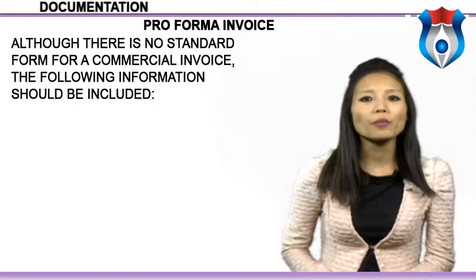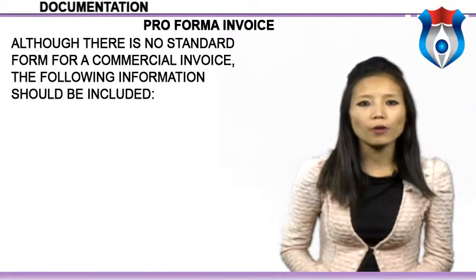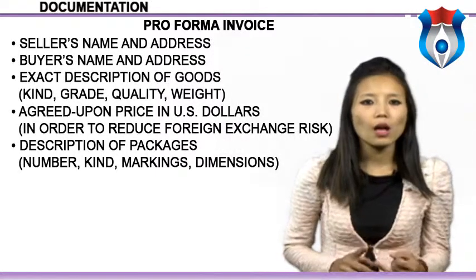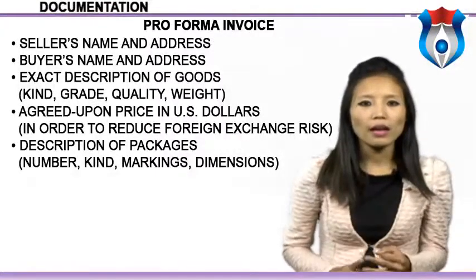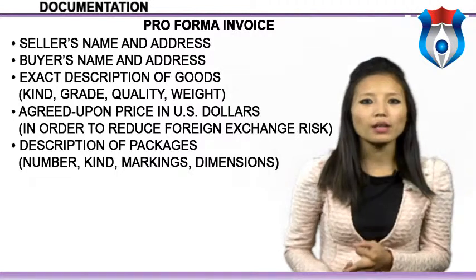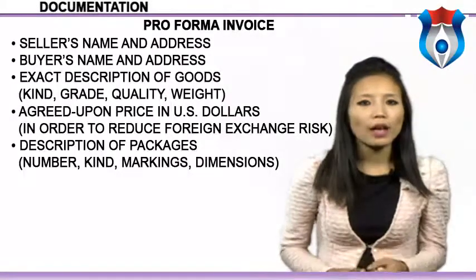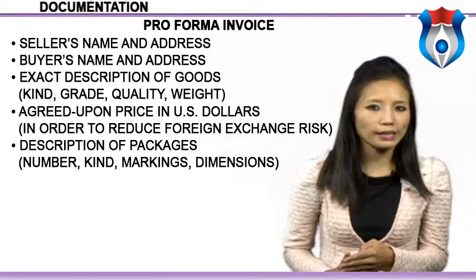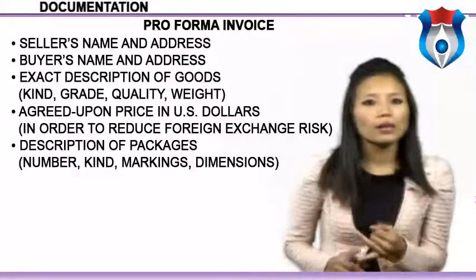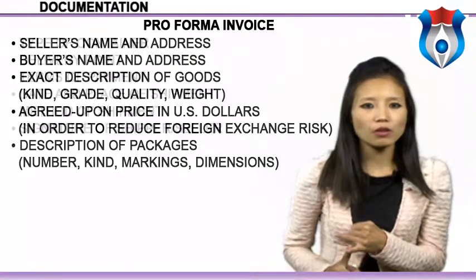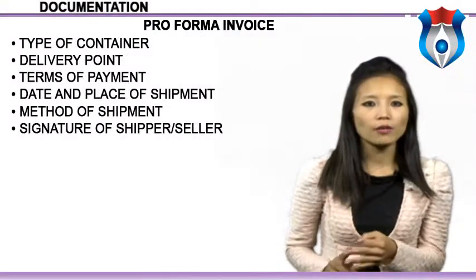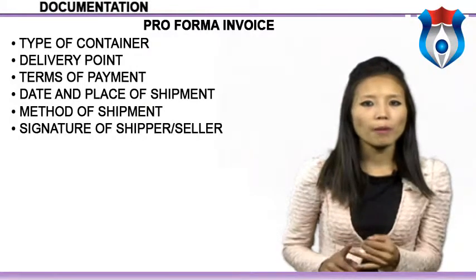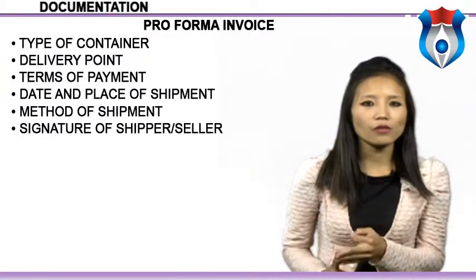Although there is no standard form for a commercial invoice, the following information should be included: seller's name and address, buyer's name and address, exact description of goods including kind, grade, quality, and weight, agreed-upon price in US dollars to reduce foreign exchange risk, description of packages including number, kind, markings, dimension, and type of container, delivery point, terms of payment, date and place of shipment, method of shipment, and signature of shipper or seller.